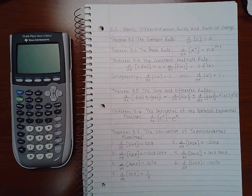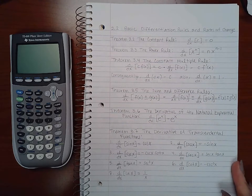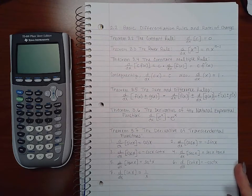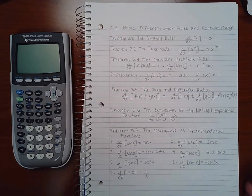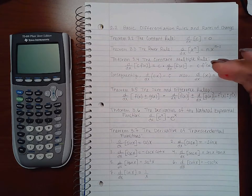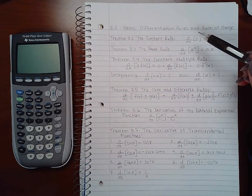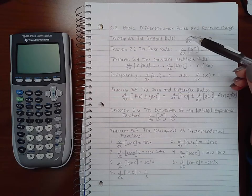Now recall that in section 2.1, I mentioned that there was a shorter way to finding the derivative besides the limit process. However, if the directions specifically say to find the derivative using the limit process, then we have to do it that way. However, there are other rules that allow us to get to that derivative faster.